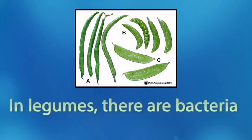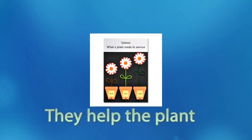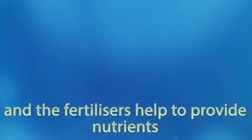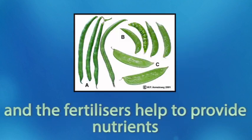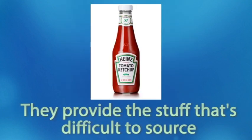In the soil, there are bacteria — nitrogen fixers — they help the plant. They live in root nodules, and the fertilisers help to provide nutrients. They provide the stuff that's difficult to source.